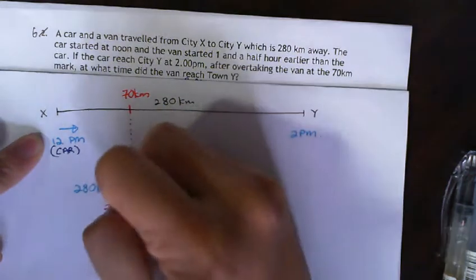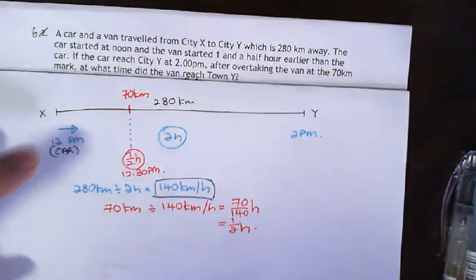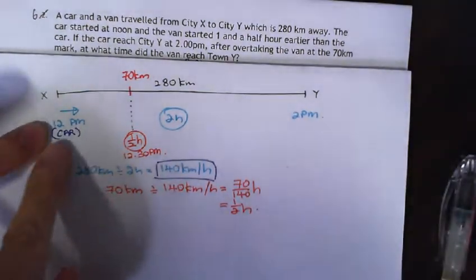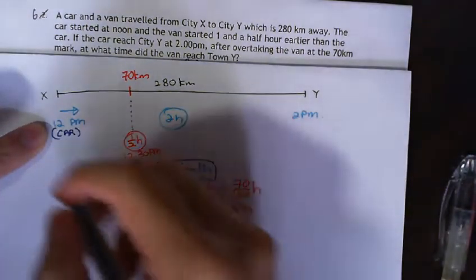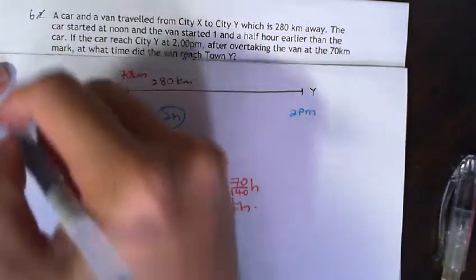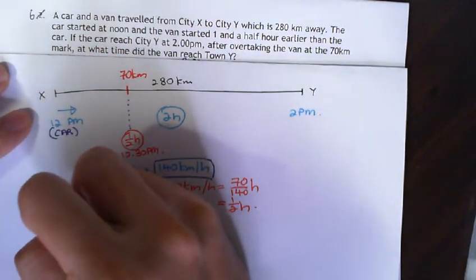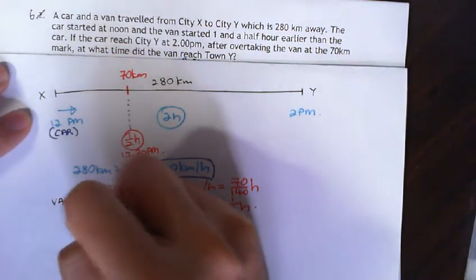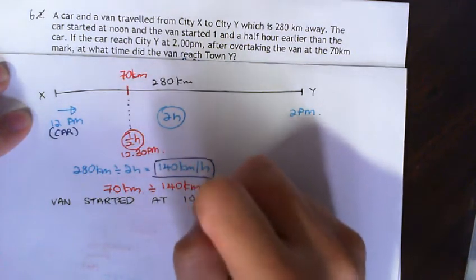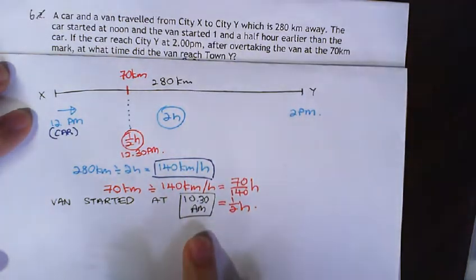Now looking at this, can we find the speed of the van? We can, because we know that the van started one and a half hours earlier. So basically, the van started at 10:30 a.m., one and a half hours earlier. The van started traveling at 10:30 a.m.